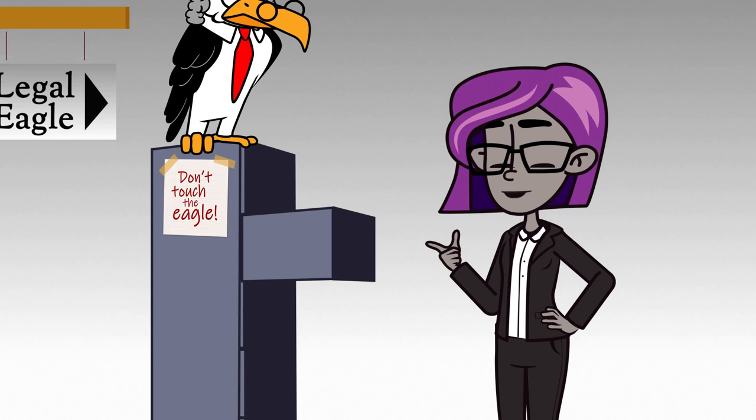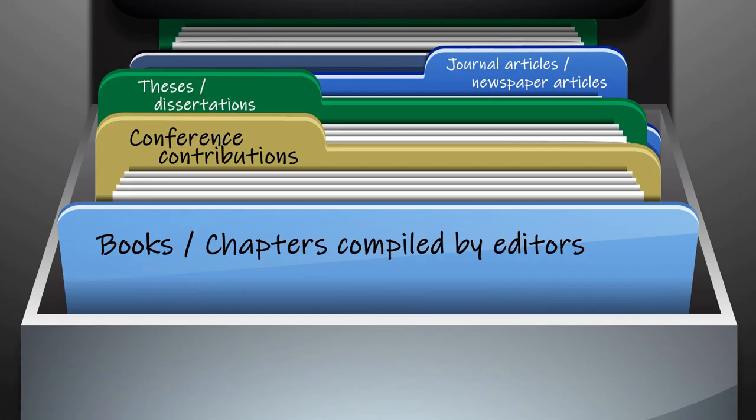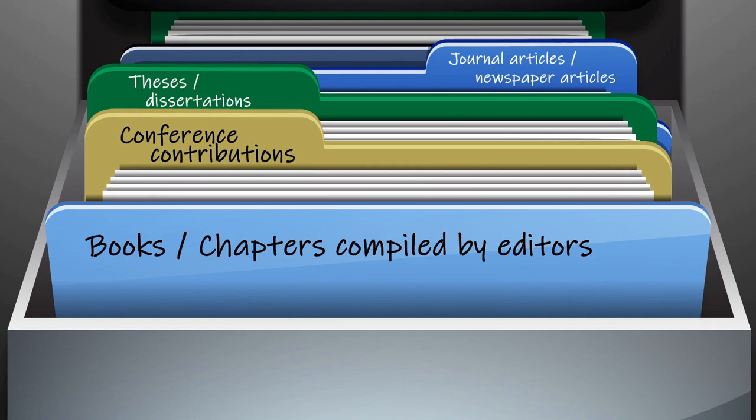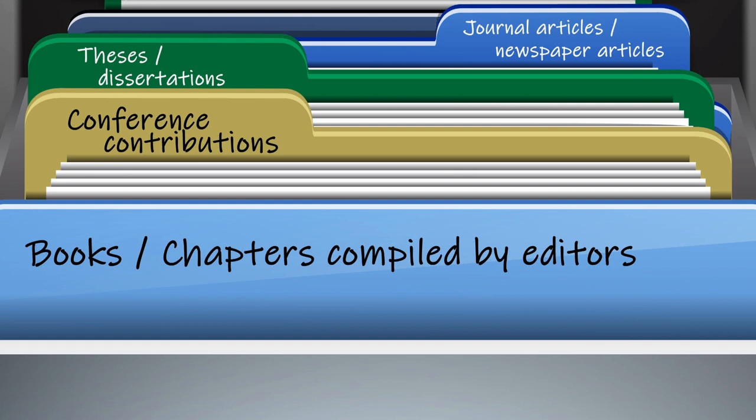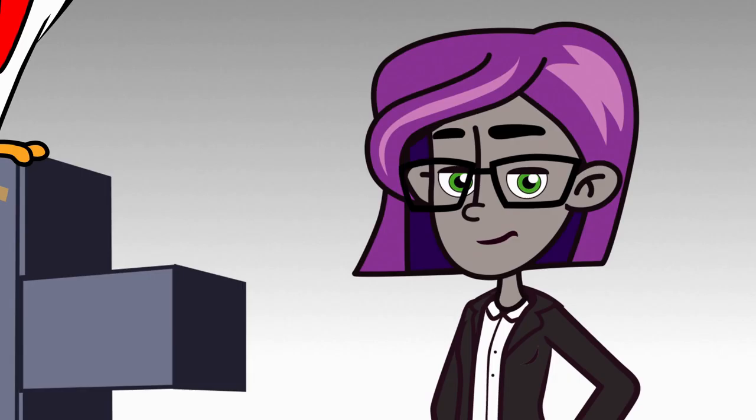Now let's take a closer look in drawer number one for literature. It contains entries for books, collected works, theses and dissertations, conference contributions, journal articles and other literature resources. In this video, I will focus on books, collected works, theses and dissertations.